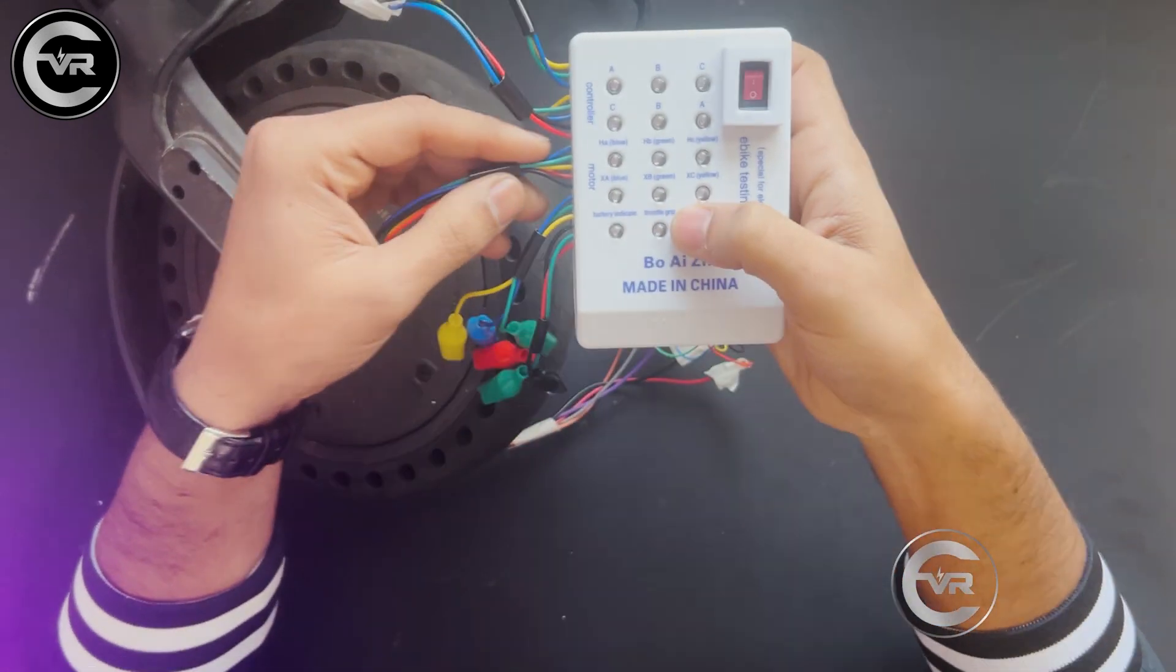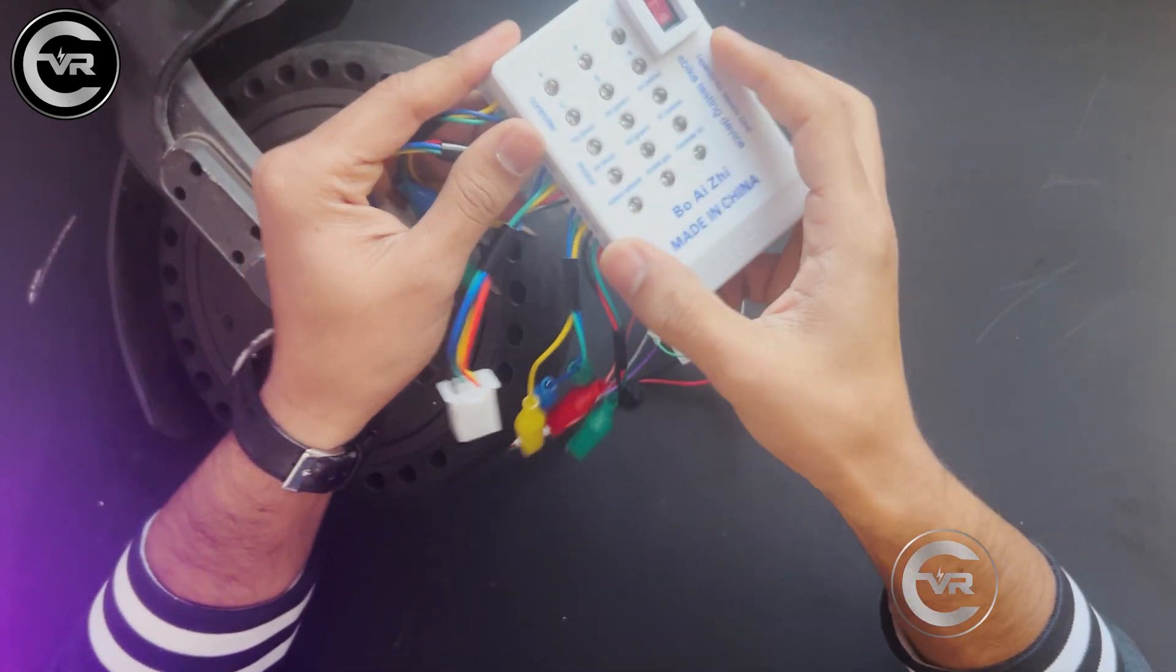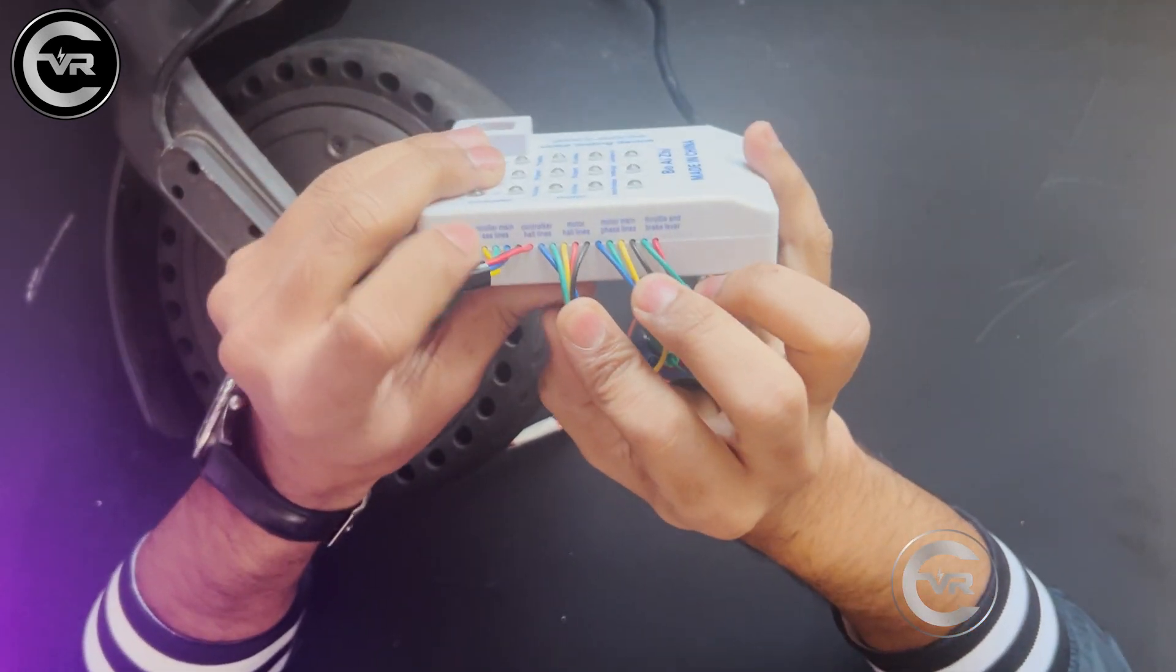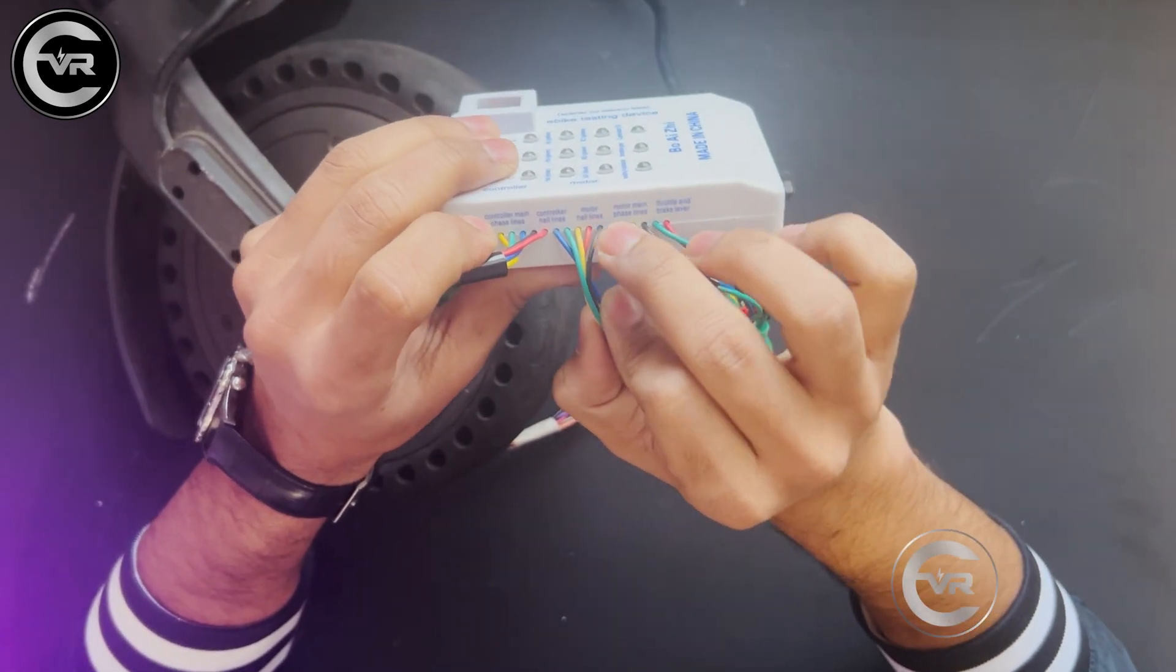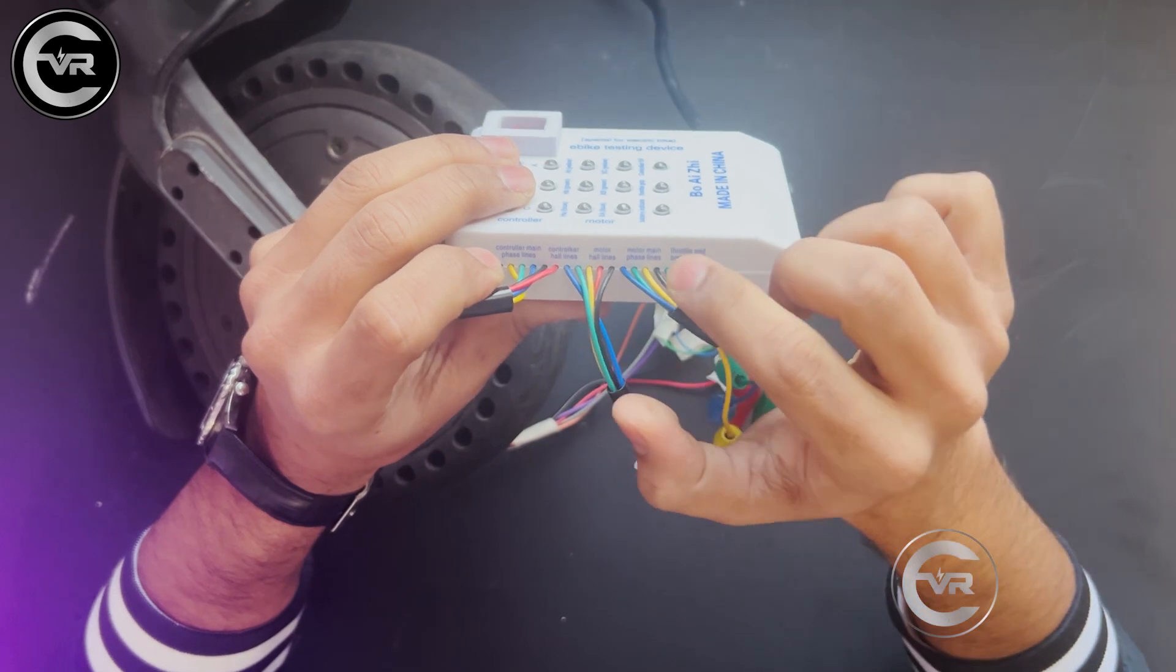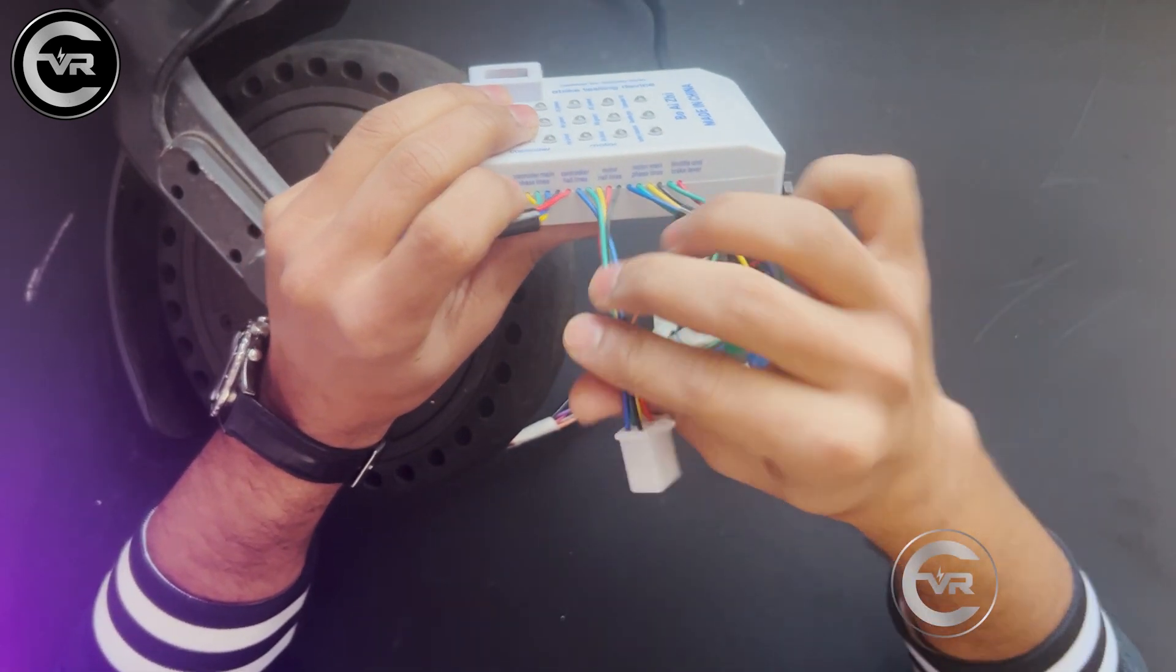So I took this tester. If you're seeing this tester, it says motor here, and on the side you can see it has motor hull lines and motor phase lines. These three and these are the five.